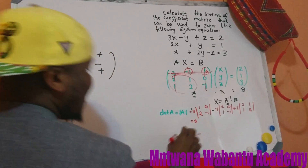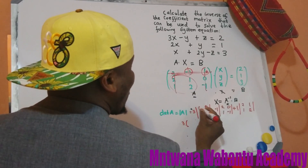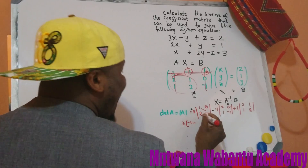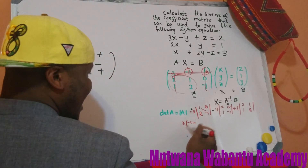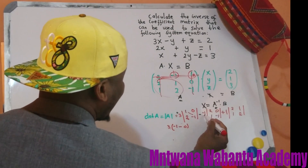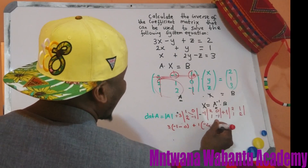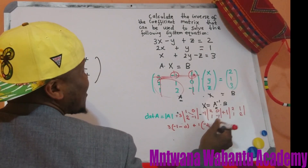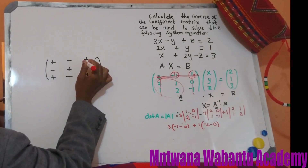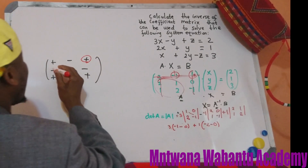So this gives us 3 times (1 × negative 1 minus 2 × 0), which is 3 times negative 1. Then minus negative 1 bracket (2 times negative 1 is negative 2, minus 1 times 0 is 0), giving negative 2. And then positive 1 times (the last 2×2 determinant). So plugging this into the calculator gives us our determinant.